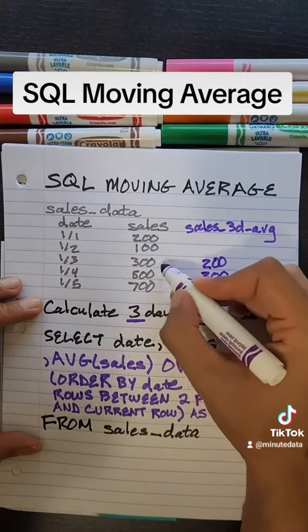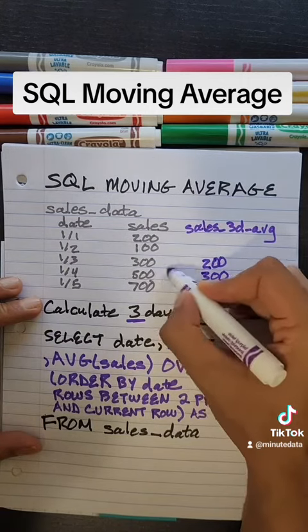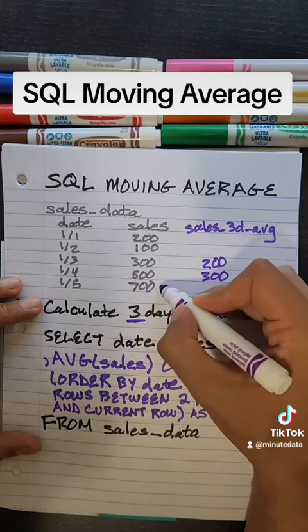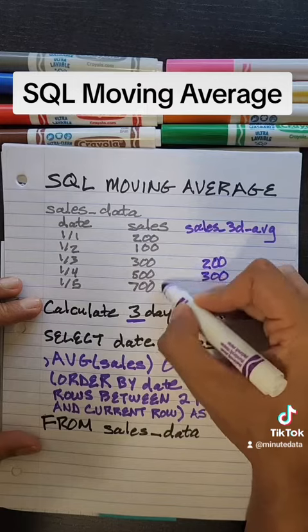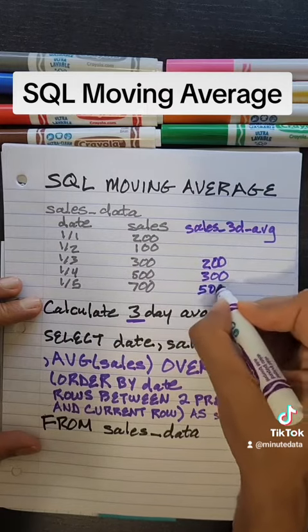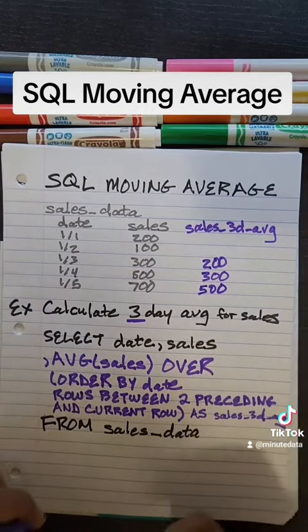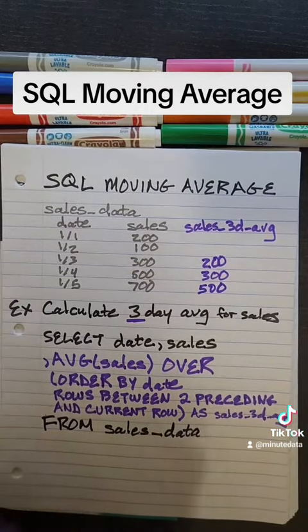Let's move our window again. We have our two preceding and our current row. That's 1500 divided by three, which is 100.